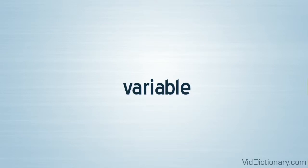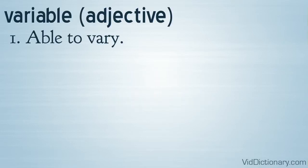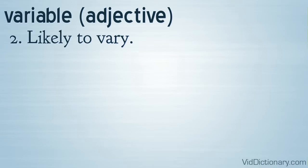Variable. Part of speech: adjective. Five definitions. Definition 1: able to vary. Definition 2: likely to vary.